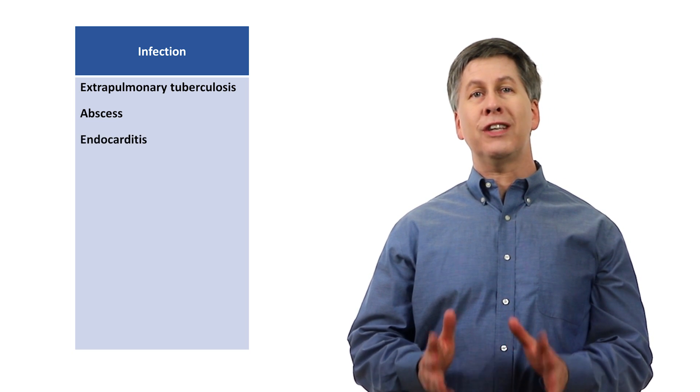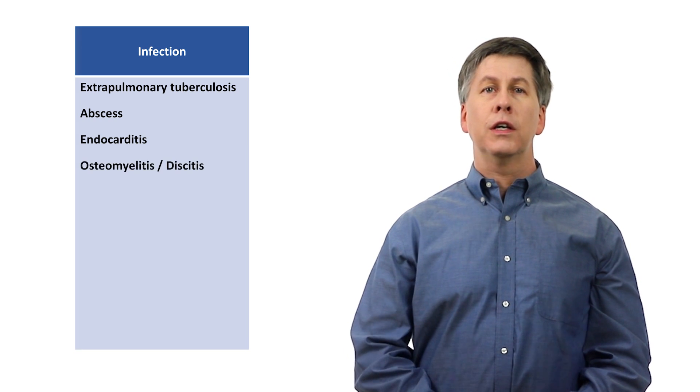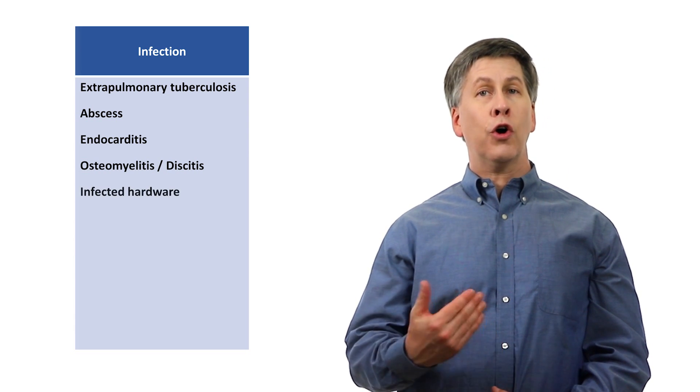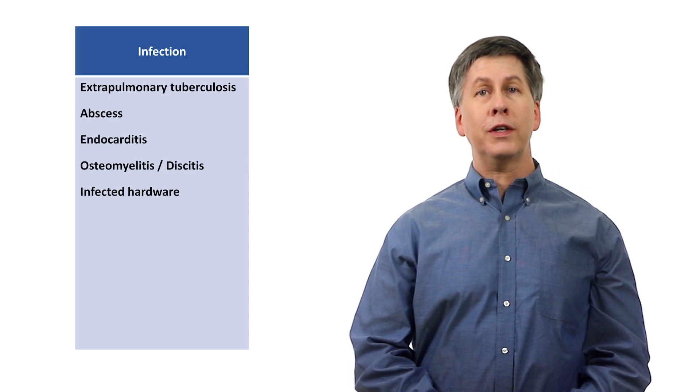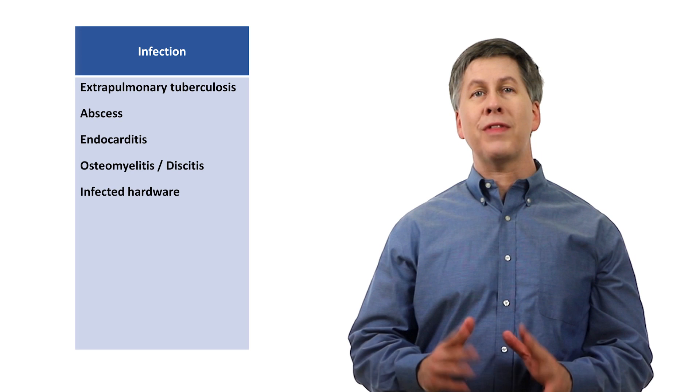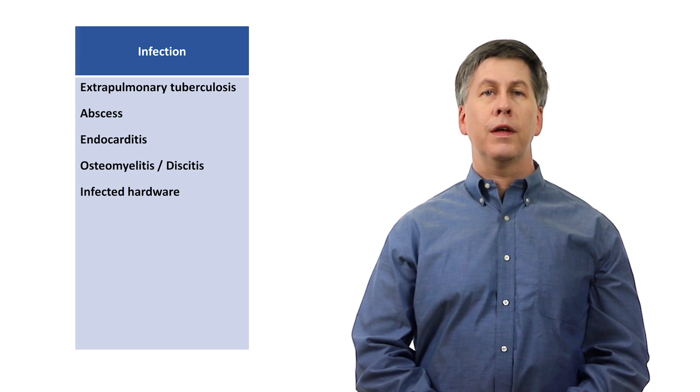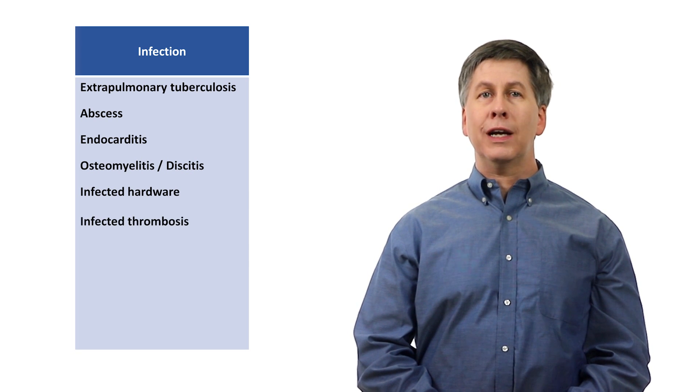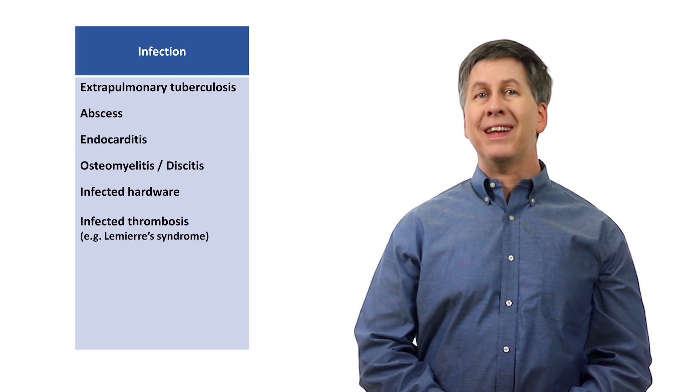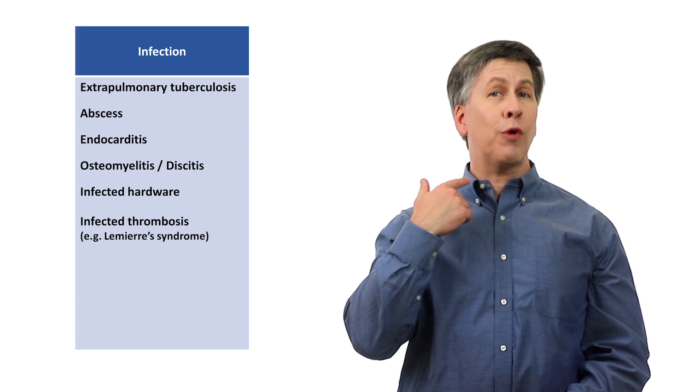Endocarditis, secondary to difficult-to-culture organisms. Osteomyelitis and dyskitis, the latter of which frequently coexists with vertebral osteo. Infected hardware, such as a prosthetic joint infection. Anecdotally, prosthetic hip infections are more likely to be without overt physical exam evidence compared to prosthetic knees. And infected thrombosis, including a condition called Lemierre's syndrome, which is infected thrombophlebitis of the internal jugular vein, most often by anaerobic bacteria which spreads locally from a throat infection.